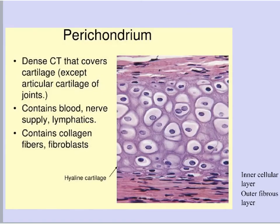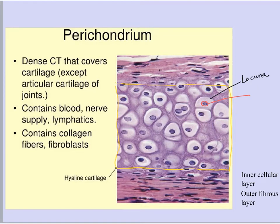Let me show you an example of cartilage. I'll outline the cartilage here. Here's the lacuna, and that circled in red is the chondrocyte — that's the cell itself. That would be the bulk of the fully differentiated cartilage.